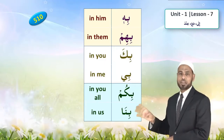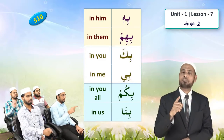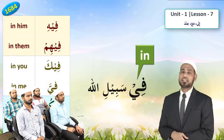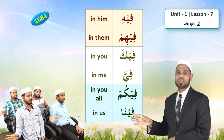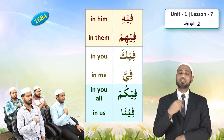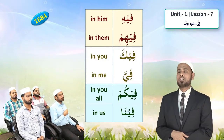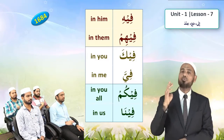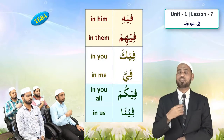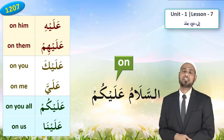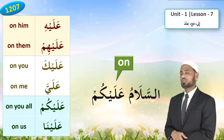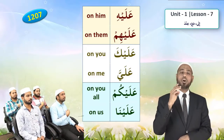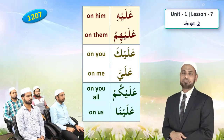Repeat after me. Bi he, bi him — 'in him,' 'in them.' And the last we learned in the last lesson is ala, meaning 'on.' Assalamu alaikum. Now translate: alayhi — on him, alayhim — on them, alayka — on you, alayya — on me, alaykum — on you all, alayna — on us.